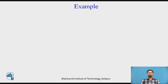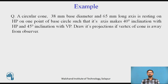Here we are solving a simple example of projection of cone. A circular cone, 38 mm base diameter and 65 mm long axis, is resting on HP on one point of a base circle such that its axis makes 40-degree inclination with HP and 45-degree inclination with VP. Draw its projections if the vertex of the cone is away from the observer.